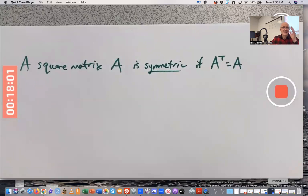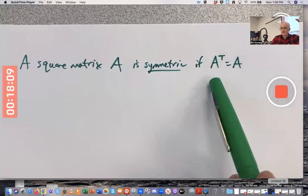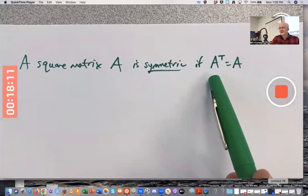And in fact, if the matrix is not square, it can't possibly equal itself. If A were 3 by 5, 3 rows and 5 columns, then A transpose would be 5 by 3, 5 rows and 3 columns. They couldn't possibly be equal.